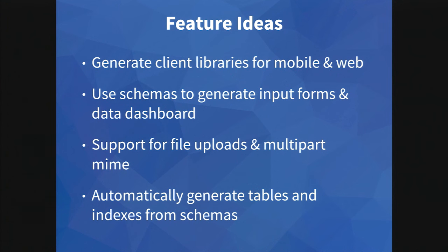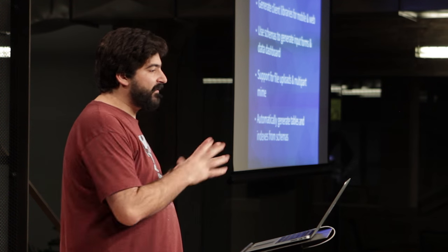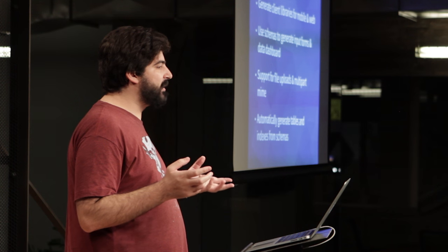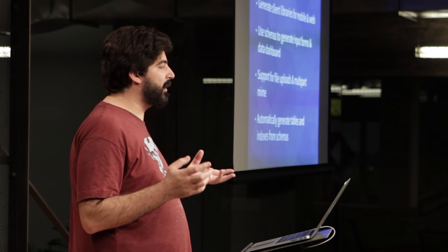I also want to generate tables and indexes from schemas. Right now you have to manually create all of your tables. But we have all of these properties and could theoretically know which ones the user wants to query against — based on what we're exposing in the API. So what if we could create indexes from the schemas? That's another thing I'm thinking about.